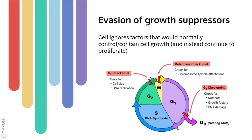The second hallmark is evasion of growth suppressors. This is the idea that cells normally have many factors telling them not to divide. In addition to waiting for signals to say 'yes, divide,' cells also have signals saying 'don't divide.' These come into play when we think about the cell cycle, which includes interphase — G1, S, and G2 — and then a portion of active division in mitosis.